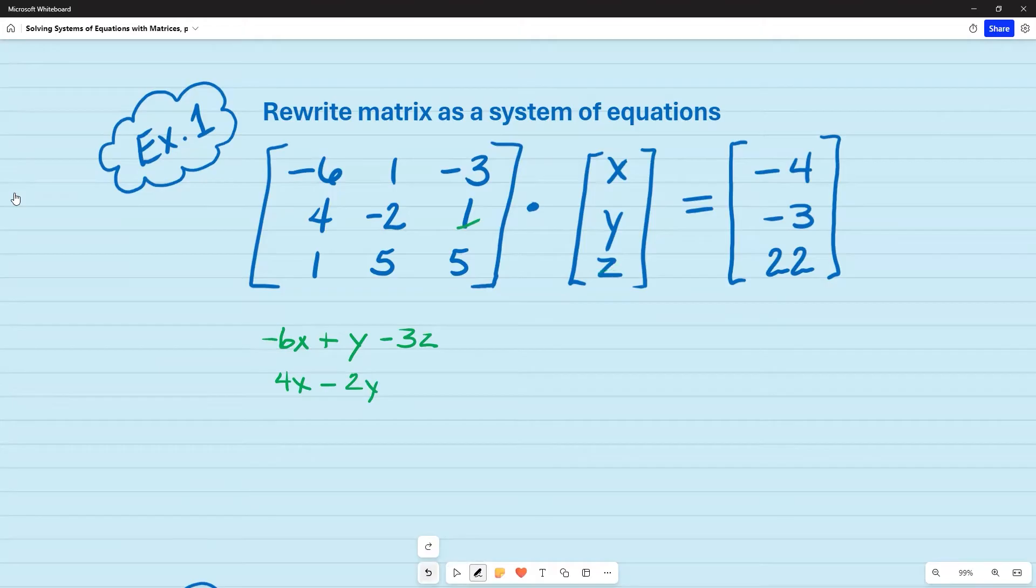And then lastly, I'm going to take the one and the z, which are in the third position. And once I multiply that, that's just plus z. I don't have to write the one. And then I go to the bottom one and I'm going to take one times x, which is x, five times y, which is five y, and then five times z, which is five z.